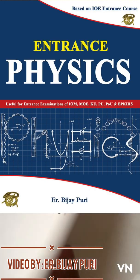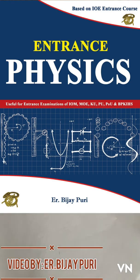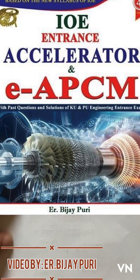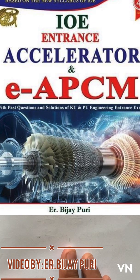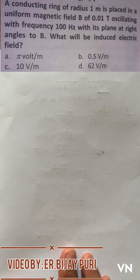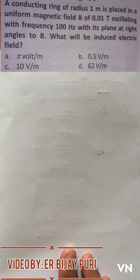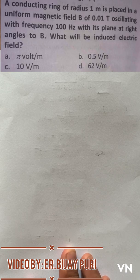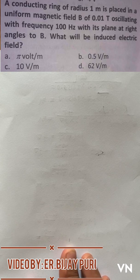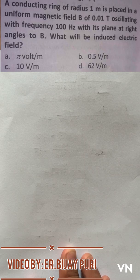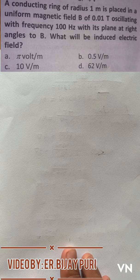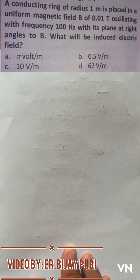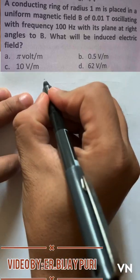Next part is I am going to solve the question that is posted by Porekshit Adhikari, which is actually from physics from the section of electromagnetic induction. In this question, as you can see in the upper part of this video, it has been said that a conducting ring of radius one meter is placed in a uniform magnetic field of 0.01 tesla and which is oscillating with frequency of 100 hertz, and its plane is placed perpendicular to the magnetic field. It has asked us to find the induced electric field. Remember here it has asked us to find induced electric field, not induced emf.